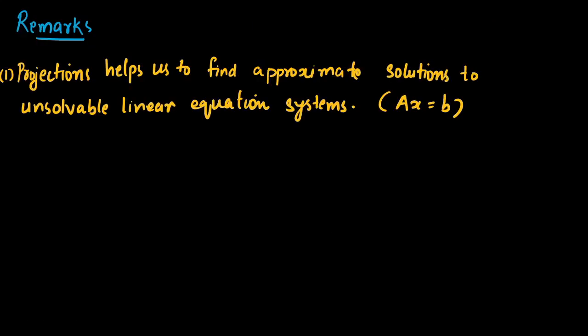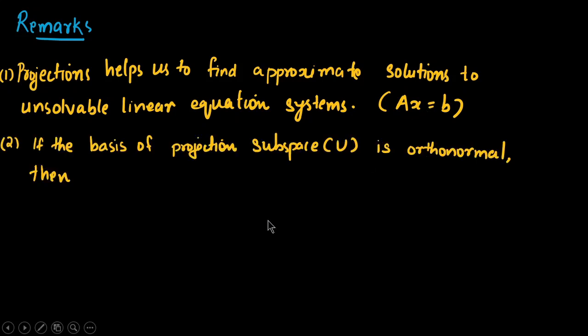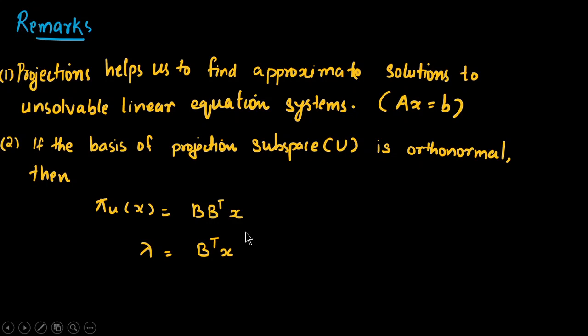In remarks: projection helps us find approximate solutions to unsolvable linear equation systems, that is Ax = b. If the basis of the projection space U is orthonormal, the equations simplify to pi_U(x) = BB^T x and λ = B^T x, because orthonormal basis vectors have unit length. That's all about orthogonal projections onto the general subspace.